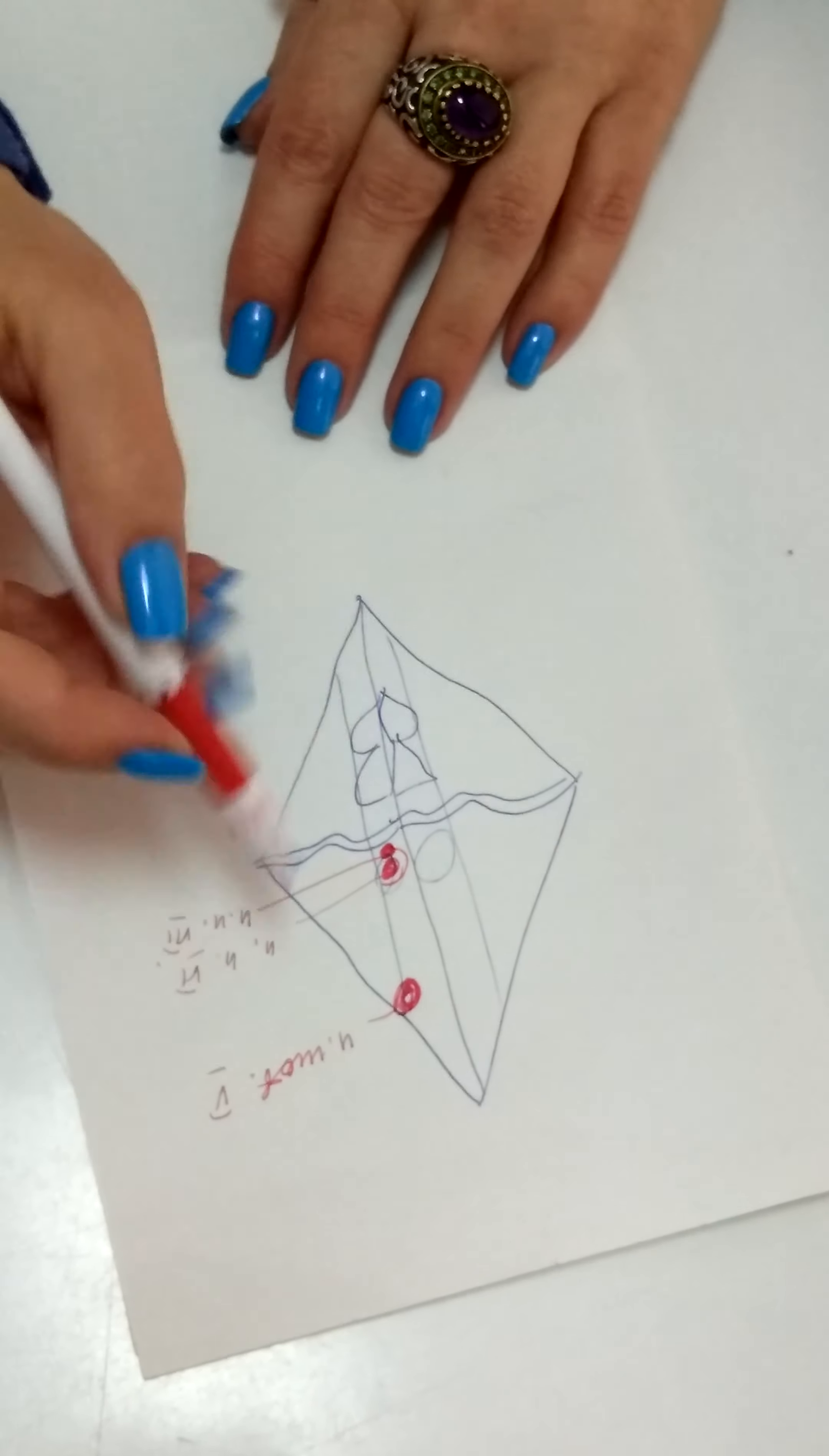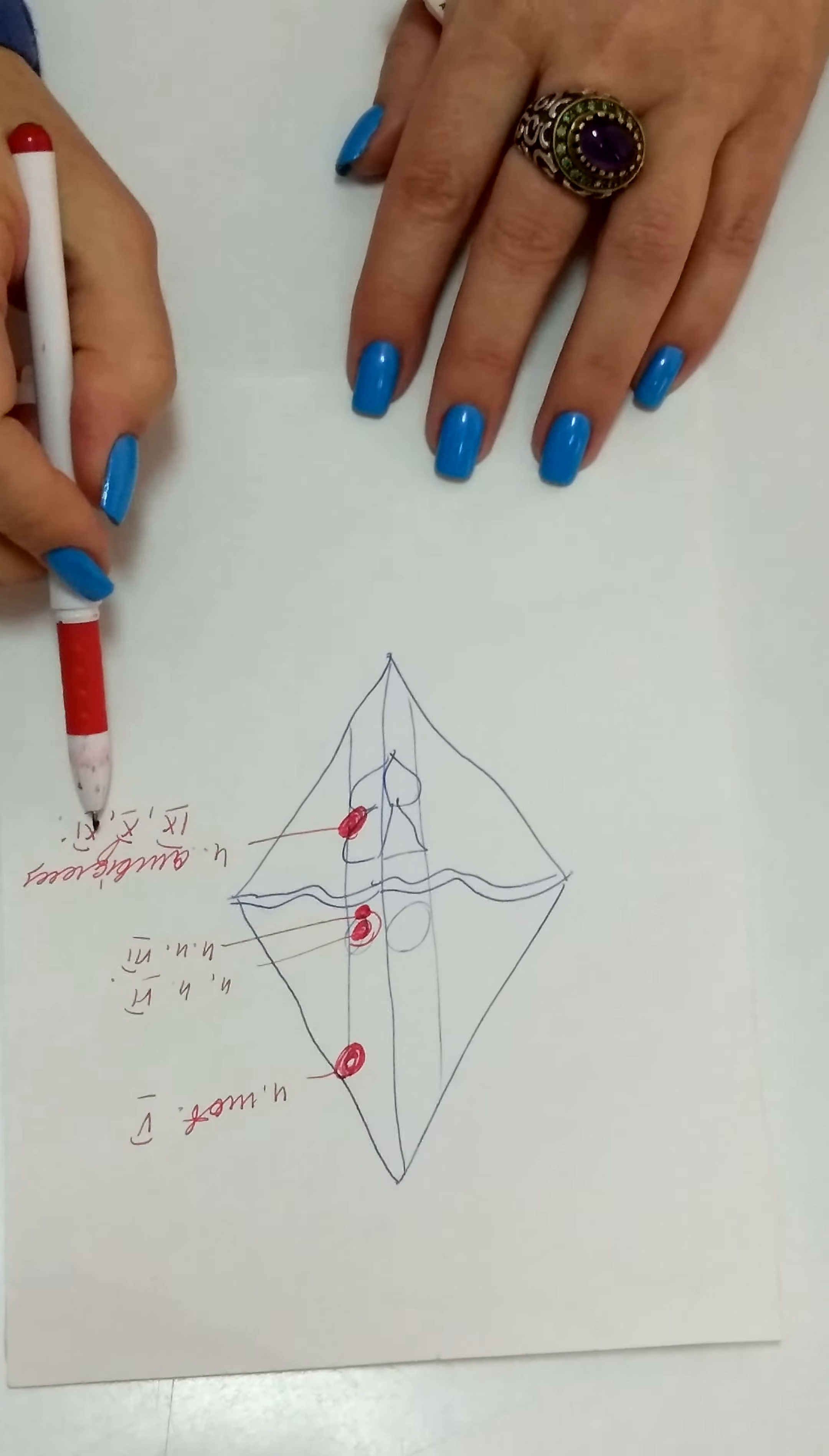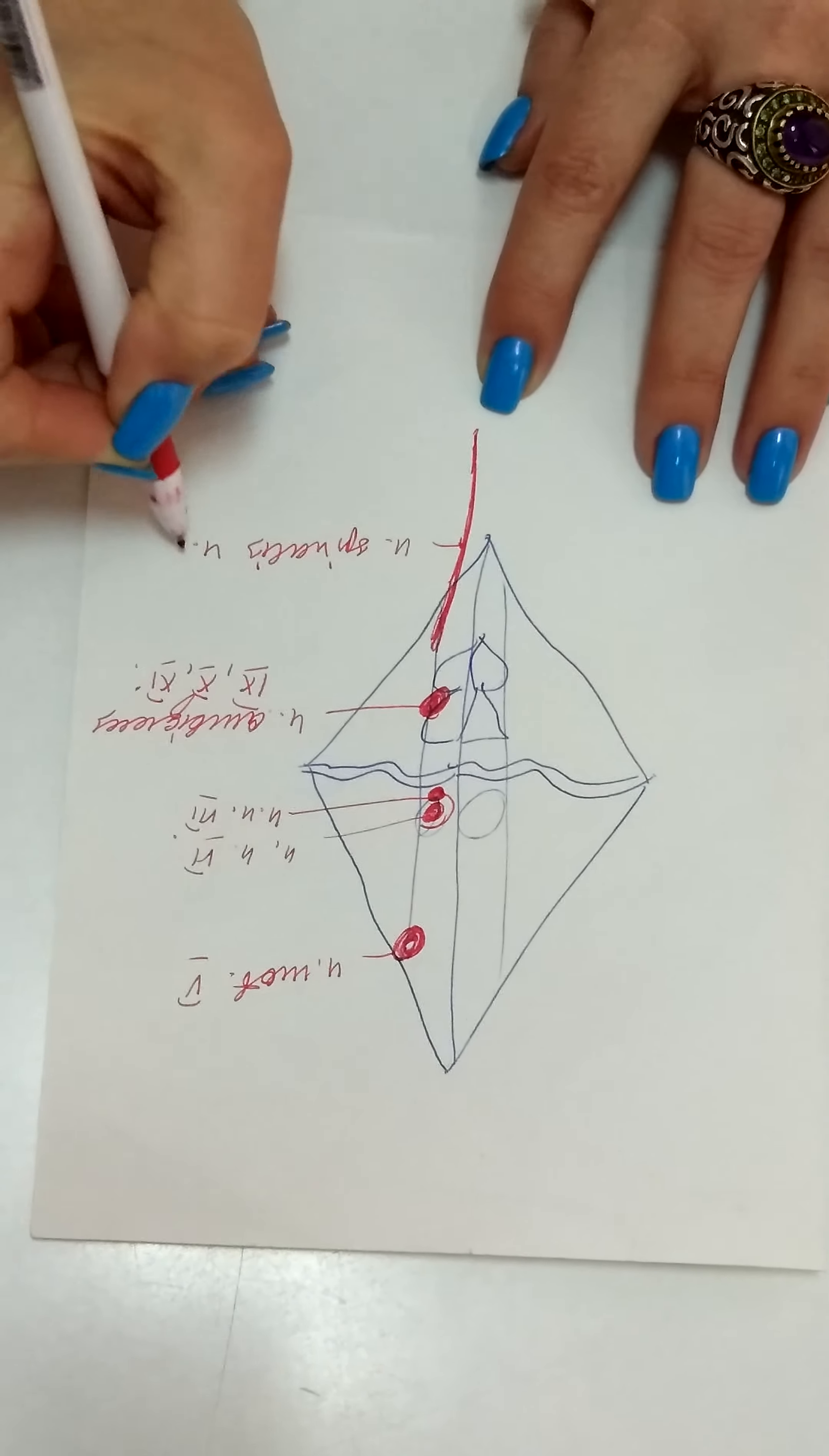On the level of trigonum nervi hypoglossi, some below, a big nucleus called nucleus ambiguus is present. This motor nucleus is common for ninth, tenth, and eleventh pairs. The eleventh pair, nervus accessorius, has another motor nucleus which has a very long structure and locates up to the upper segment of spinal cord. That's why this nucleus is called nucleus spinalis nervi accessorius.